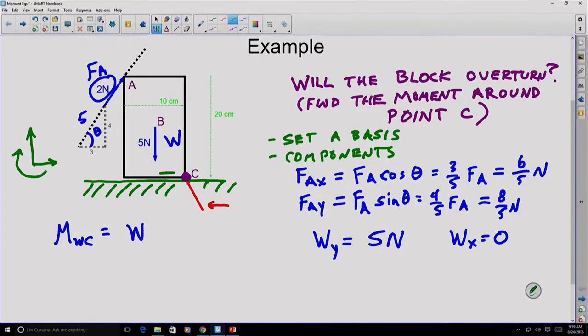The moment arm is the perpendicular distance. Let's do that with a little dotted line here. Perpendicular distance to the line of action of that force from point C. And because weights tend to act in the center of gravity or the center of the mass, we'll assume that's halfway across the block. So that's going to be a distance of five centimeters.